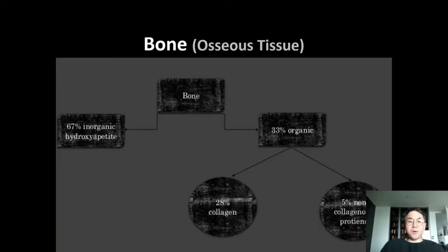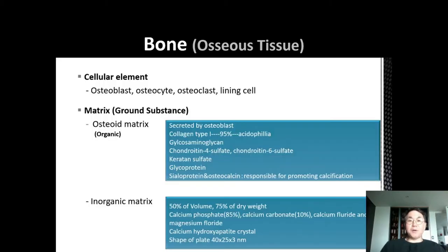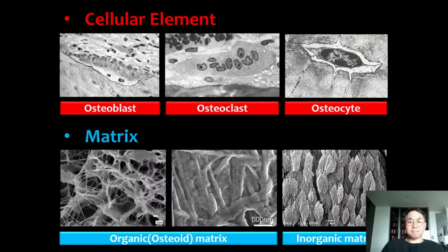The bone consists of inorganic hydroxyapatite and an organic compartment. Bone also has cellular elements: osteoblasts and osteoclasts. Osteoblasts make bone and osteoclasts resorb the bone. Inside the bone, there is organic matrix and inorganic matrix. The organic matrix is collagen — almost entirely type one collagen — and the inorganic matrix is hydroxyapatite.